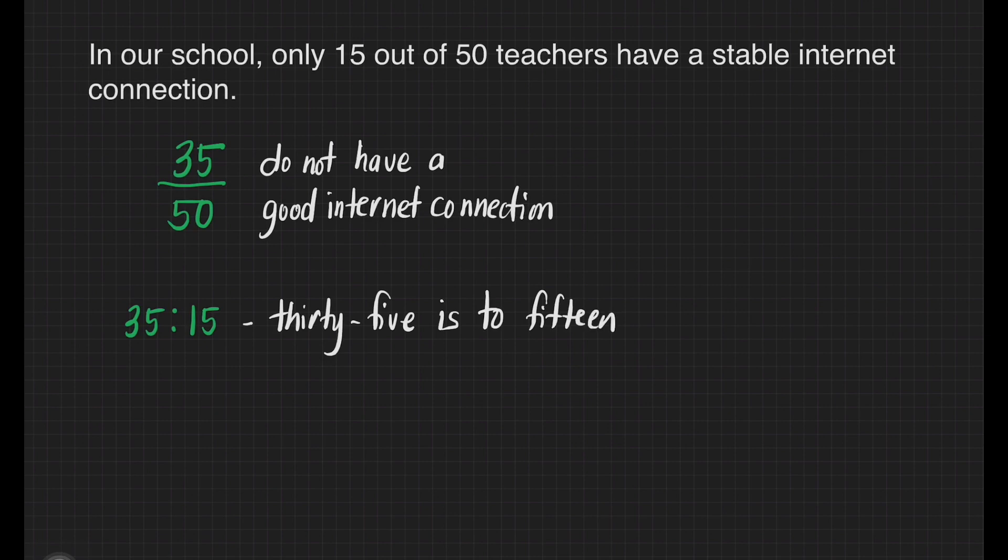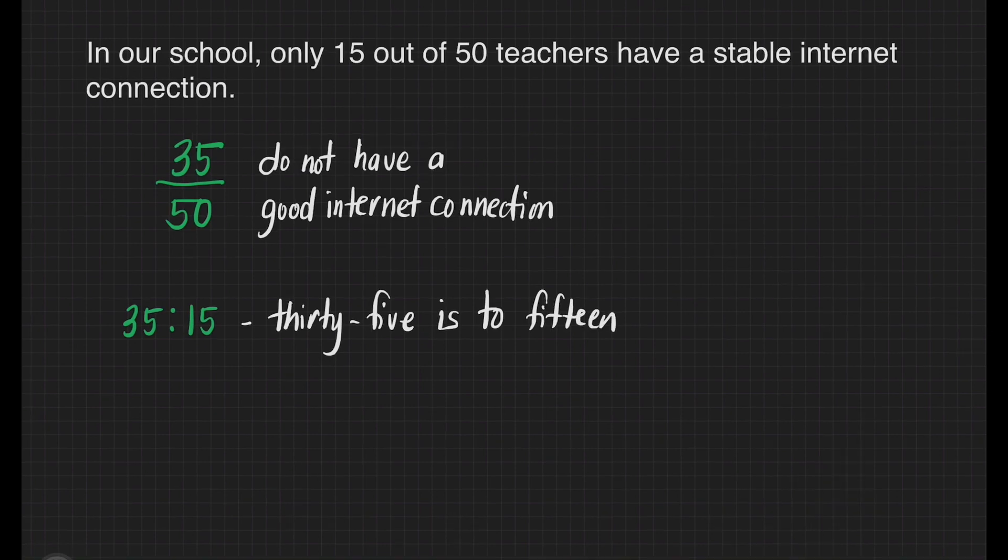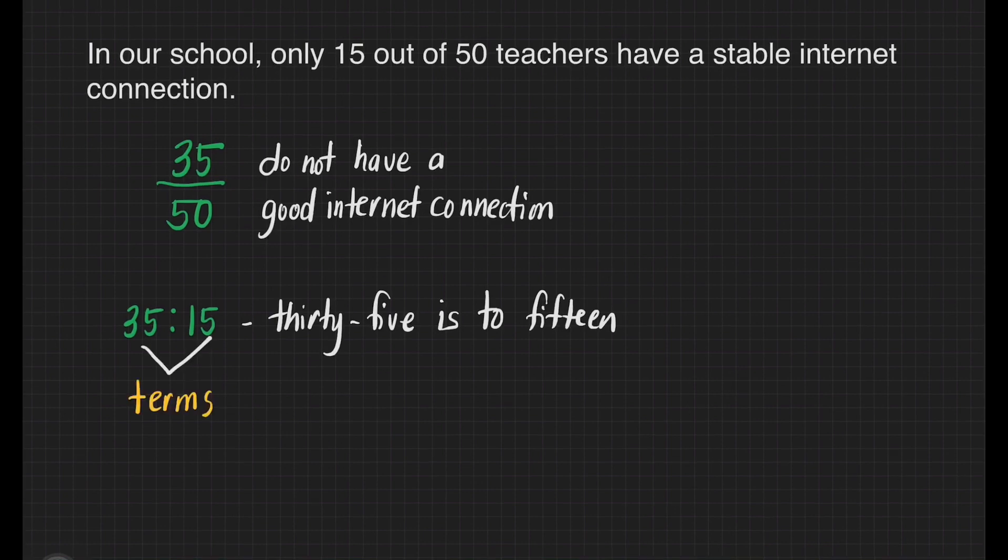We read this as 35 is to 15. The numbers 35 and 15 are the terms of the ratio. When each term of a ratio is multiplied or divided by the same non-zero number, an equivalent ratio is produced.